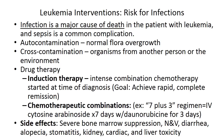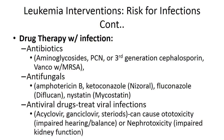Together, these chemotherapeutic combinations can cause severe bone marrow suppression leading to pancytopenia — decreased white blood cells, red blood cells, and platelets — putting patients at increased risk for infection and death. Side effects also include nausea, vomiting, diarrhea, alopecia, stomatitis, and kidney, cardiac, and liver toxicities.